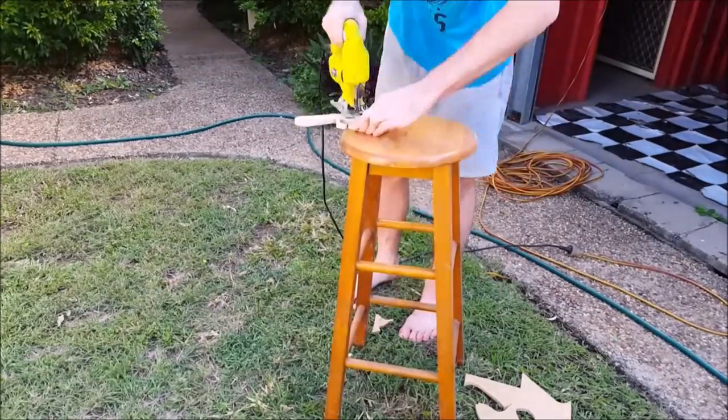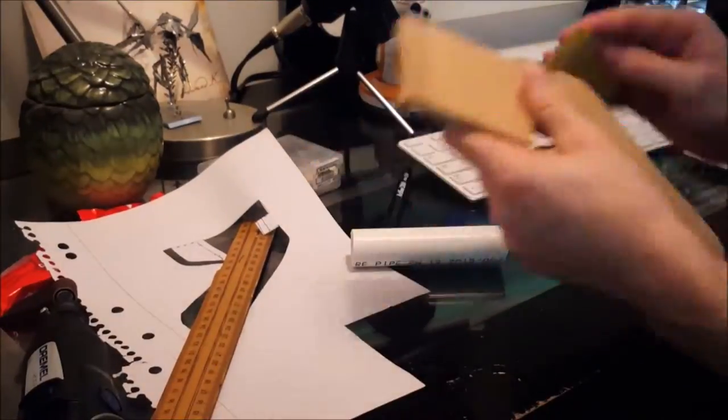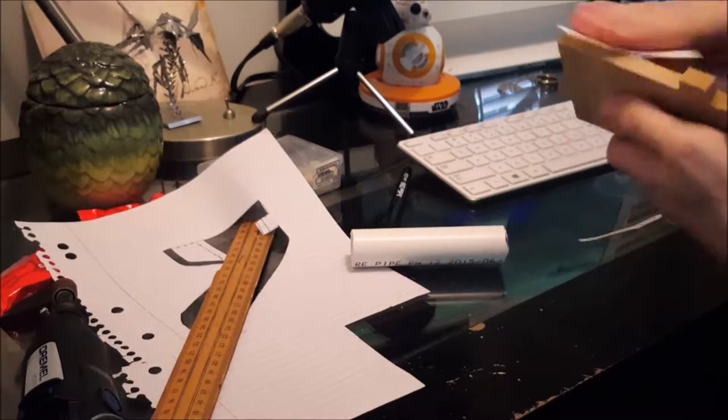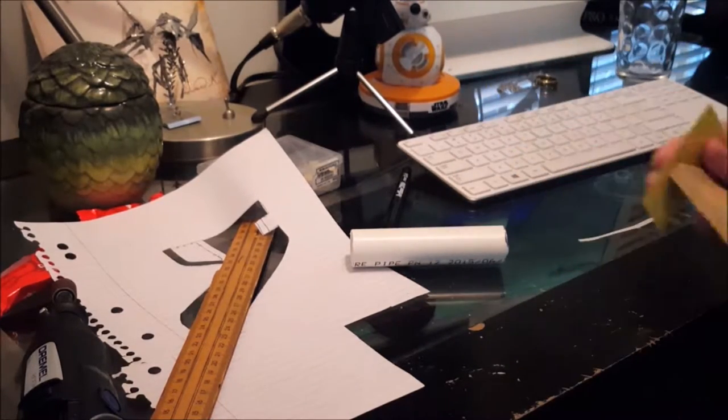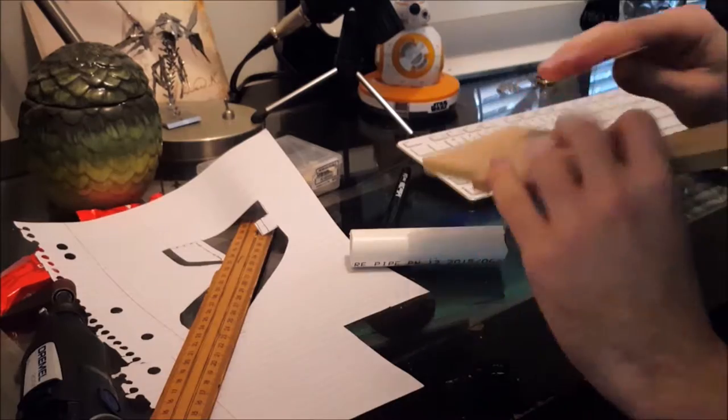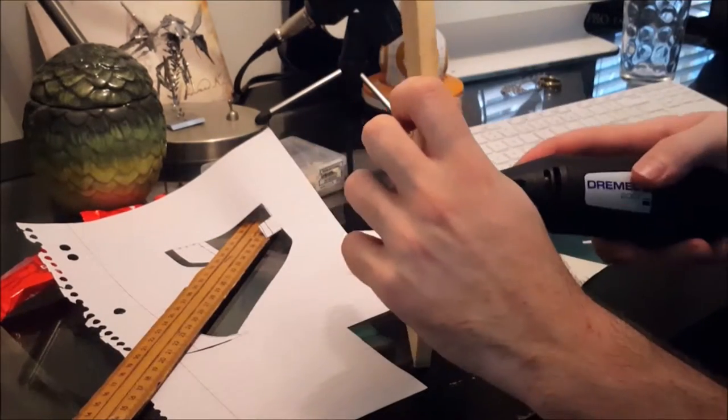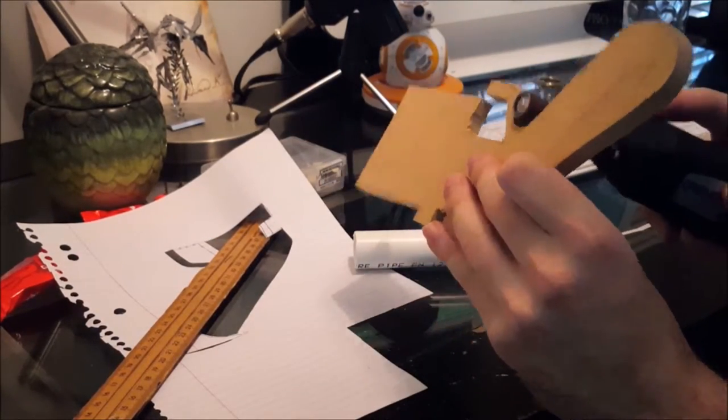The pieces were then sanded down using 180 grit and 240 grit sandpaper as well as my Dremel tool to get into some of those tight spaces. Lots and lots and lots of sanding.